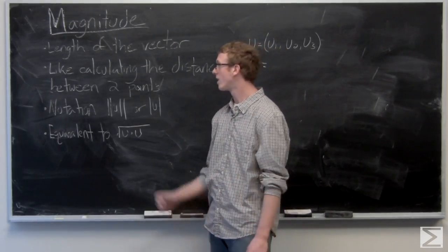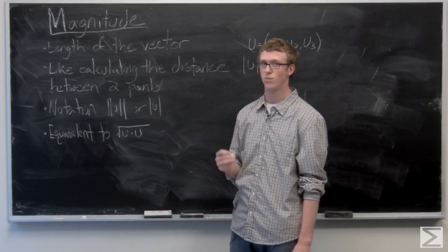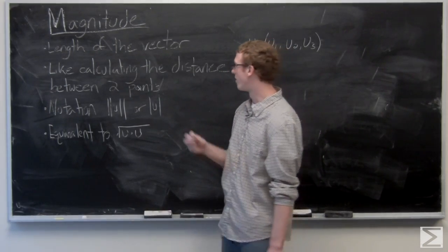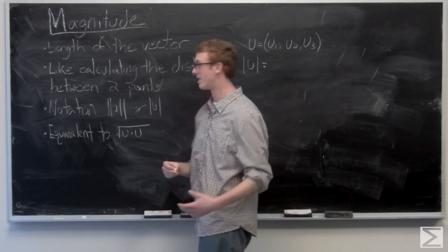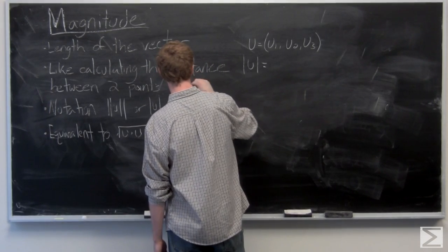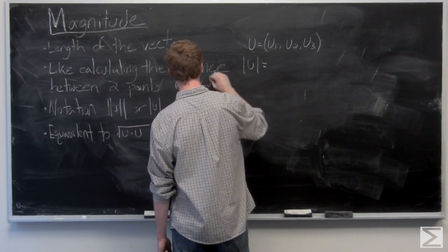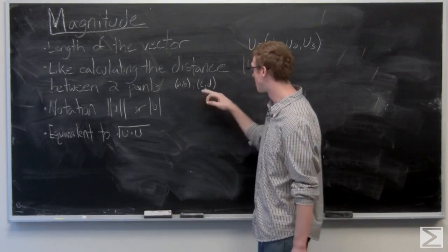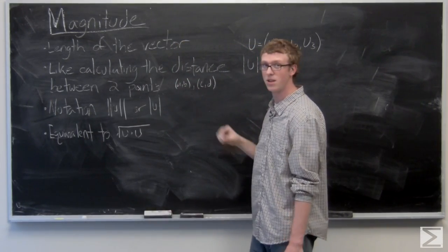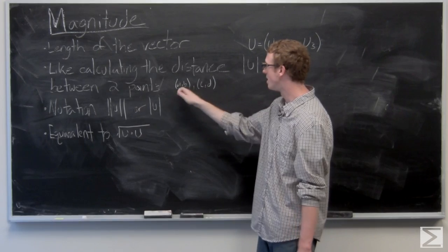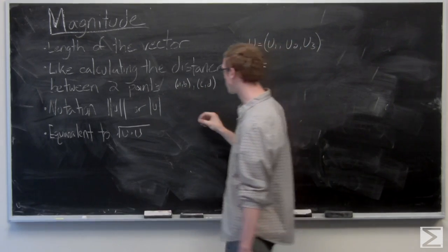It's really easy to calculate. It's like calculating the distance between two points, which you know, points a, b, and c, d. If you want the distance from c, d to a, b, it's just the square root of c minus a squared, plus d minus b squared.